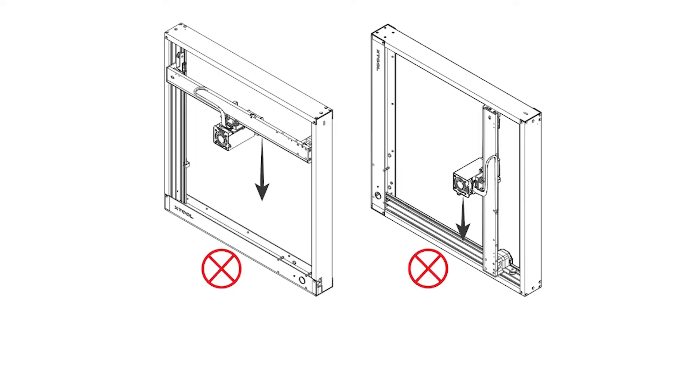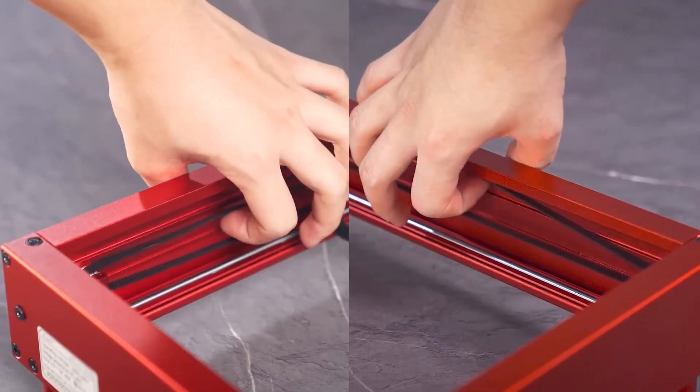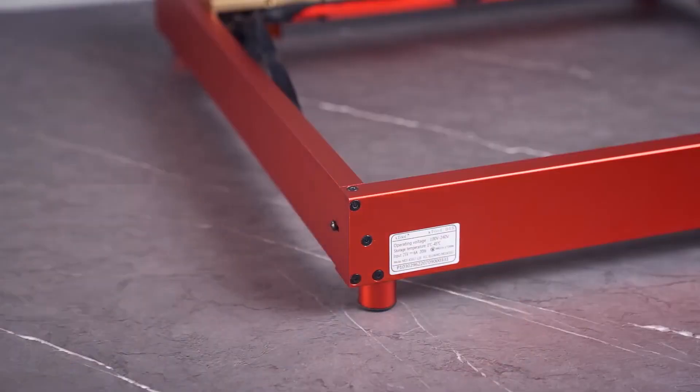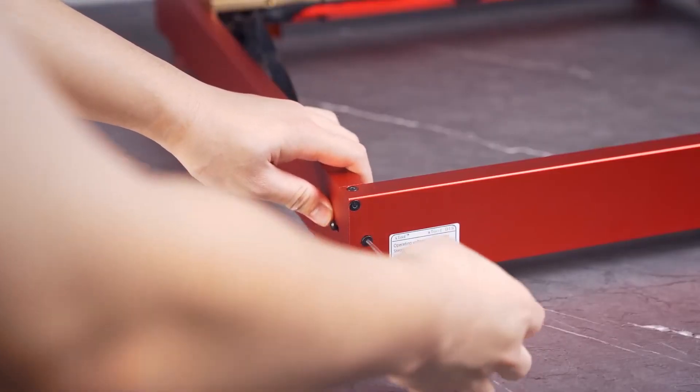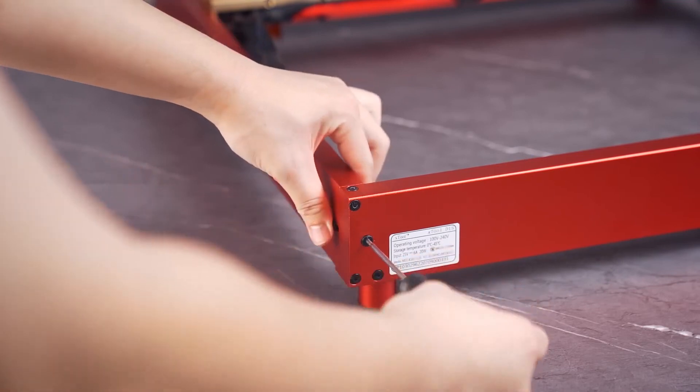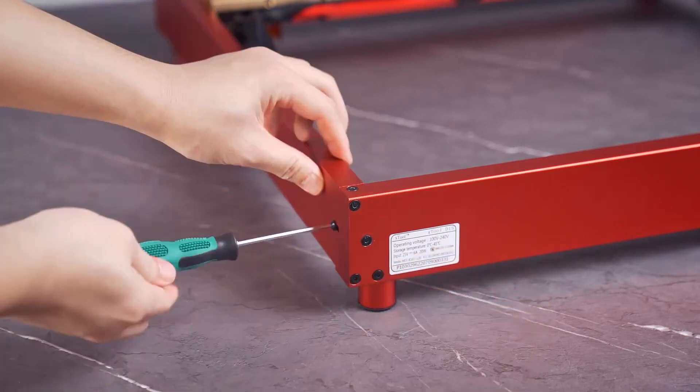Precaution. Prevent the middle plate and laser module from falling down themselves. Otherwise, the limit pieces may be damaged. Adjust the tension of the timing belts. Try to set the timing belts on the right and left plates to the same tension so that XTool D1 Pro can cut and engrave materials properly.